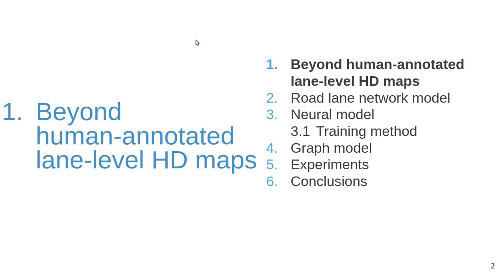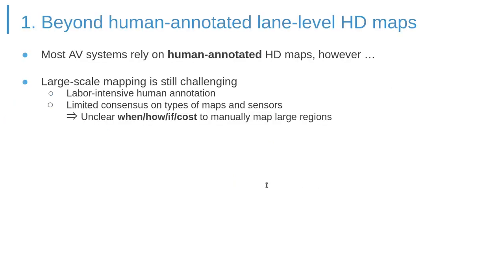First, I will explain the many aspects of automatic lane map generation that can be advantageous for conventional autonomous vehicle systems. After that, I will explain our new hybrid neural and graph-based model — a self-supervised learning method — along with experimental results. While most conventional systems rely on human-annotated HD maps for safely navigating the world, there exist several limitations in following this approach.